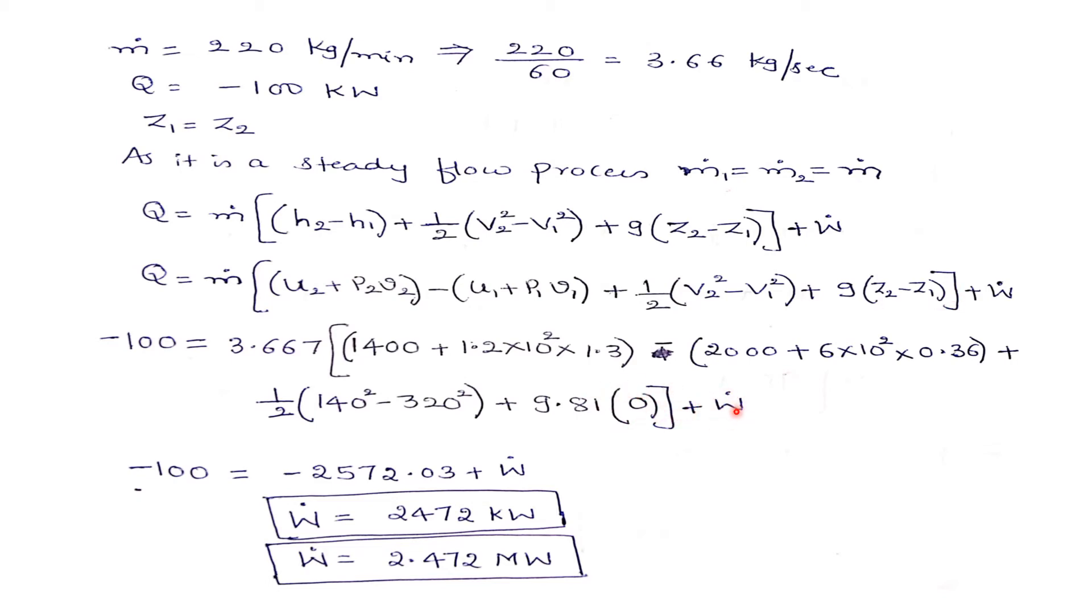He has asked us to calculate the work done per unit time. Minus 100 equals minus 2572.08 plus W dot. Therefore, W dot equals 2472 kilowatts or 2.472 megawatts.